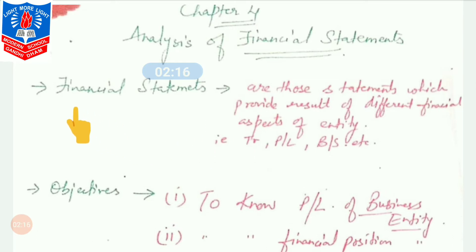First, we need to know the meaning of financial statements. In a normal sense, financial statements are those statements which provide the result of different financial aspects of an entity — entity meaning a business firm. These are statements made using tools such as trading account, P&L, and balance sheet. We can also say financial statements disclose the detailed financial condition of the firm.